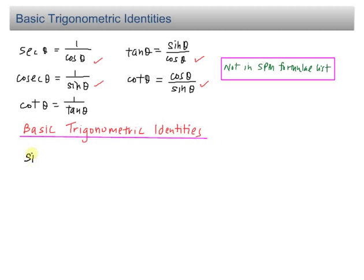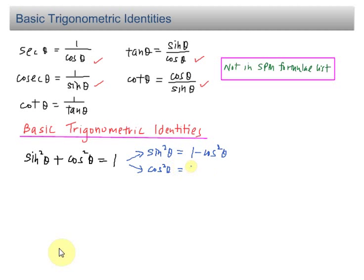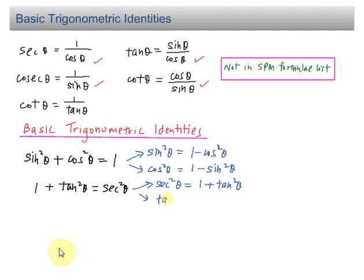The first identity is sin²θ + cos²θ = 1. This identity links sin θ and cos θ together. Therefore, you can always change sin²θ to 1 − cos²θ, and you can change cos²θ to 1 − sin²θ. The second basic identity is 1 + tan²θ = sec²θ. This identity links tan θ and sec θ together, so you can always change sec²θ to 1 + tan²θ, and tan²θ to sec²θ − 1.